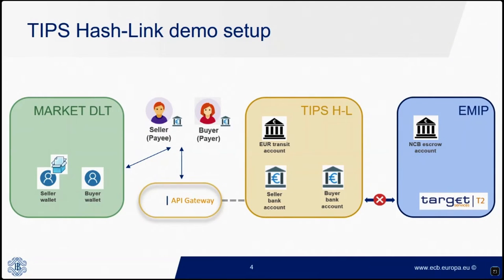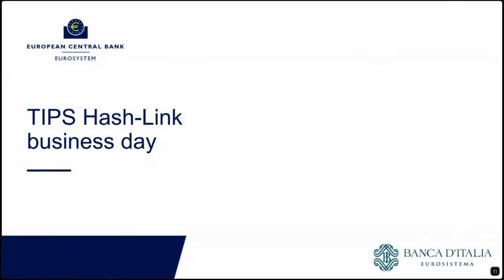Today's business case is a trial DVP transaction between two eligible participants: the seller and the buyer. The asset leg of the transaction is settled on the market DLT platform, whereas the cash leg is settled on the TIP/HashLink platform. Participants have wallets in the market DLT platform and Euro-denominated accounts in TIP/HashLink. The seller owns the asset to be exchanged in his wallet. Participant software applications communicate directly with the market DLT platform and the API gateway.